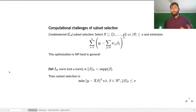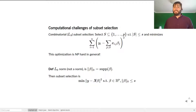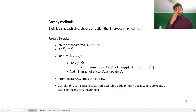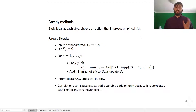We can write subset selection more succinctly by defining the L0 norm, which is the number of non-zero elements in beta — the size of the support of beta. Subset selection is then: find beta such that the L0 norm of beta is bounded by s. This is not actually a norm, and it defines a highly non-convex set, making this problem very hard to solve. There are heuristics like greedy methods, and we'll talk about why they don't necessarily do that well.